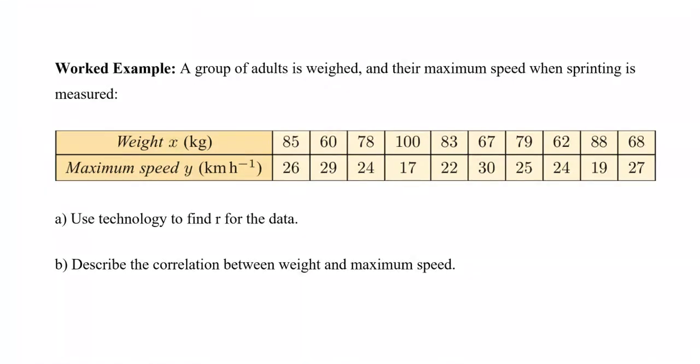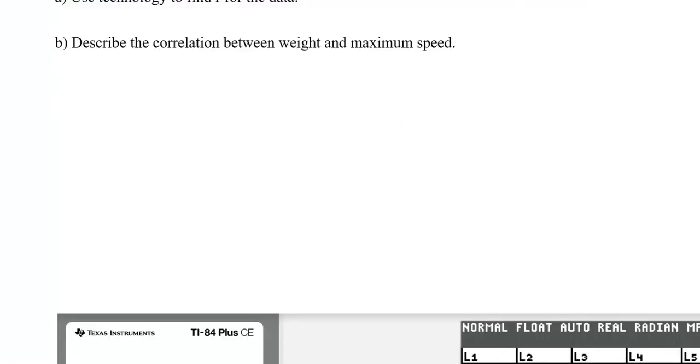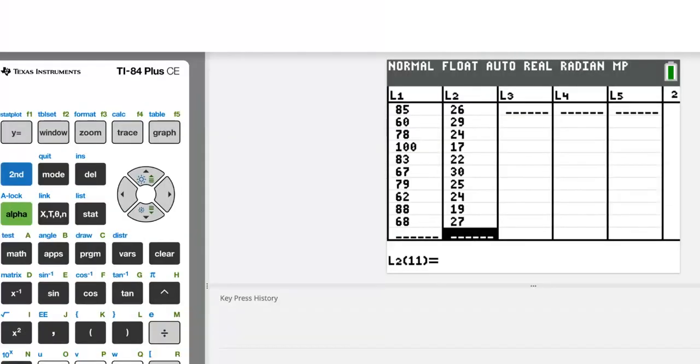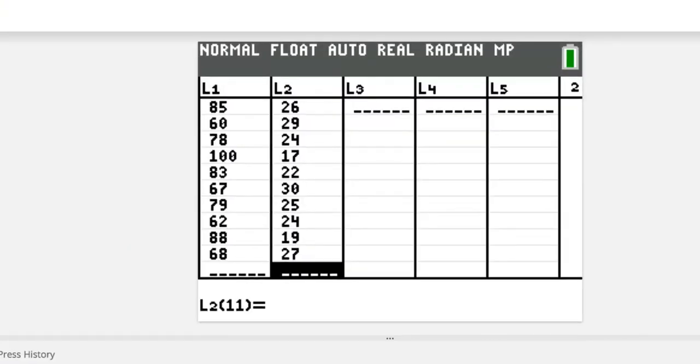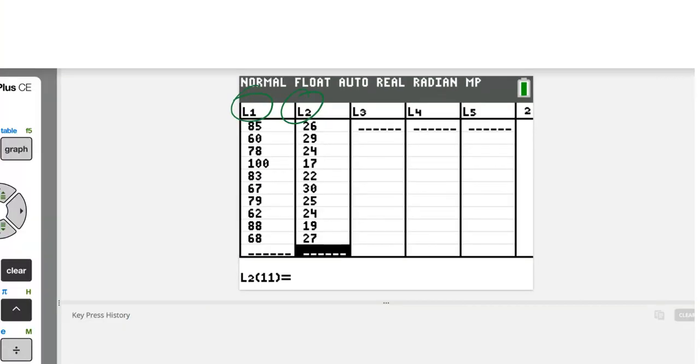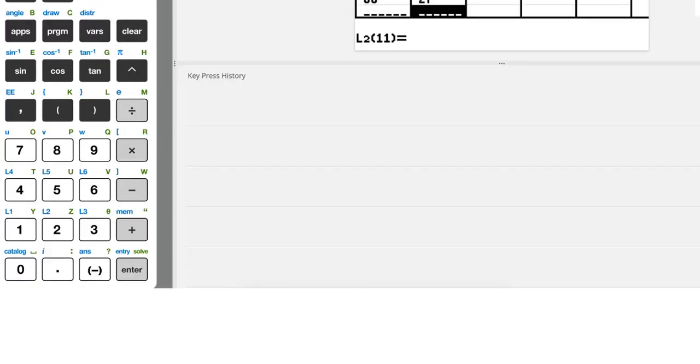You're going to press the stat button and then enter to get the edit feature up, and we're going to list those variables in columns L1 and L2. I mean, it could be any columns, but let's just remember the first thing is L1 and the second is L2. So, we type them in.